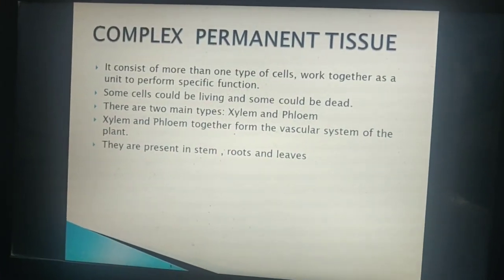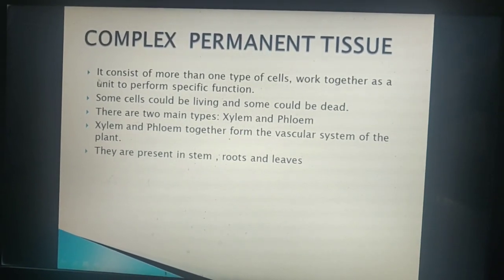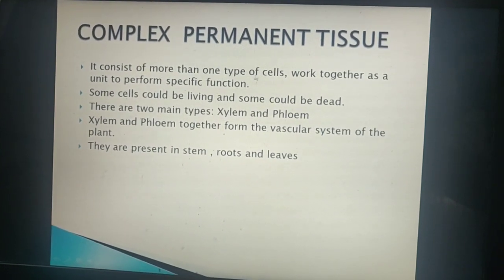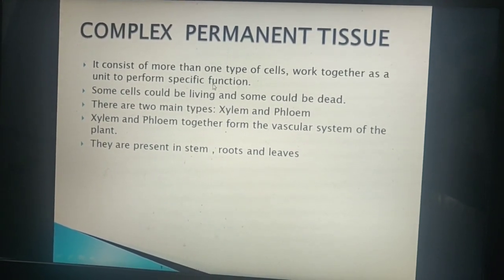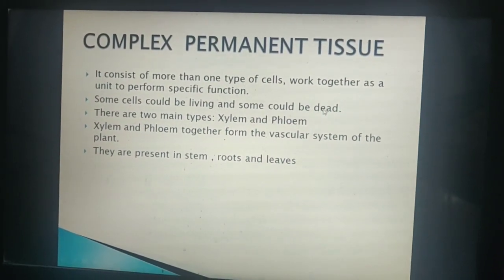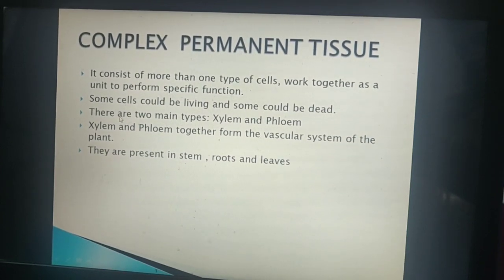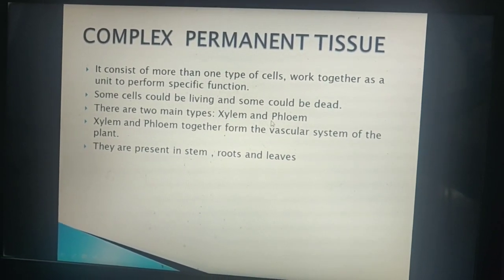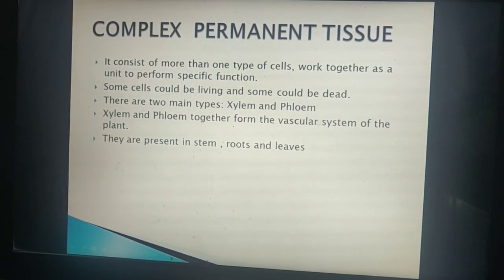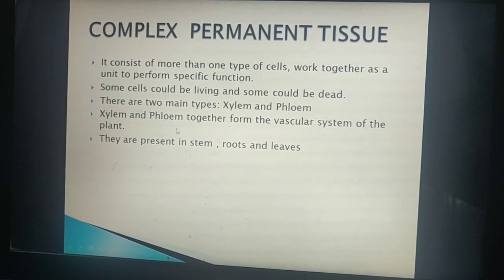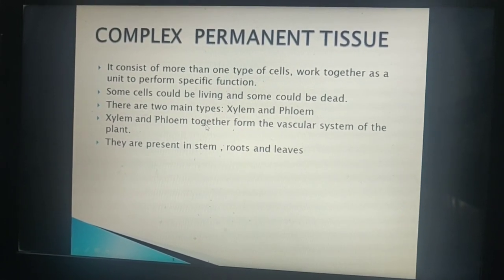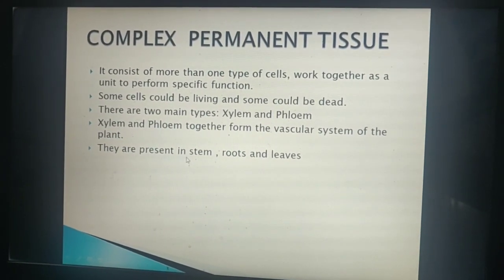Complex permanent tissue consists of more than one type of cells. They work together as a unit to perform a specific function. Some cells could be living and some could be dead. These are mainly of two types: xylem and phloem. Together, xylem and phloem form the vascular system of the plant, also called vascular bundles or the conducting tissues. They are mainly present in stem, roots, and leaves.